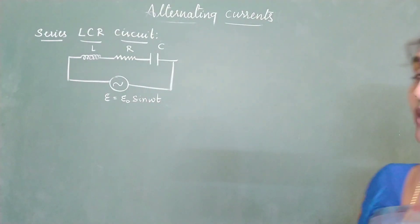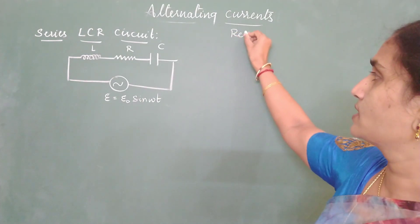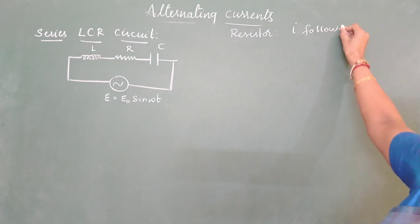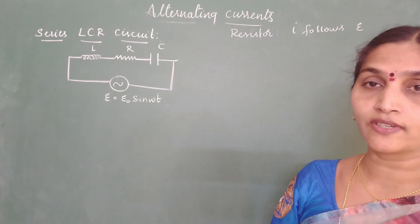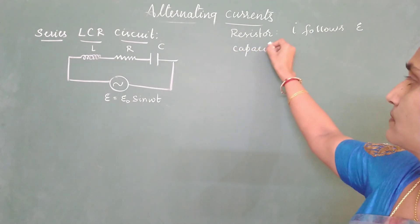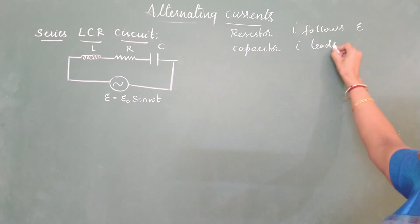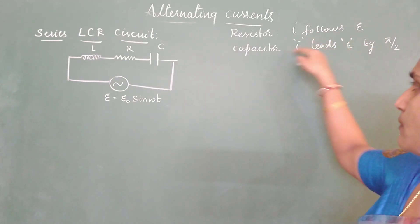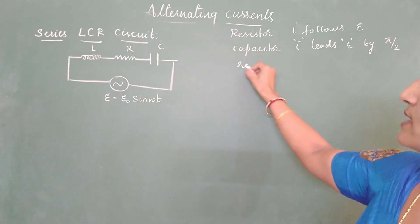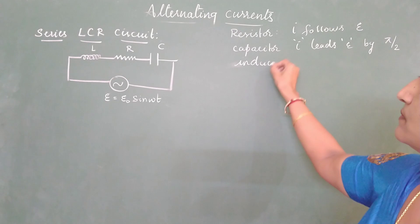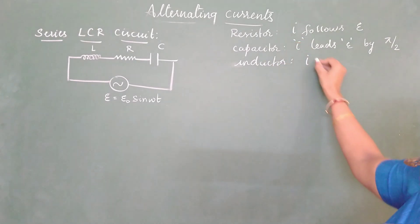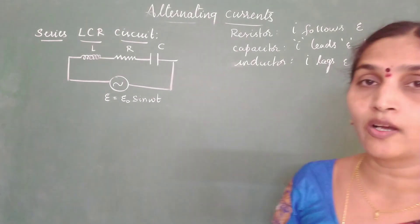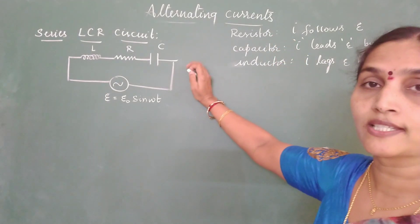When we studied individually for inductor, capacitor, and resistor: in case of a resistor, current follows EMF, so the phase difference between current and EMF is zero. In case of a capacitor, current leads EMF by 90 degrees. For an inductor, we have proved that current lags EMF by 90 degrees. Now we are going to make use of these conditions for the phasor solution of this LCR circuit.